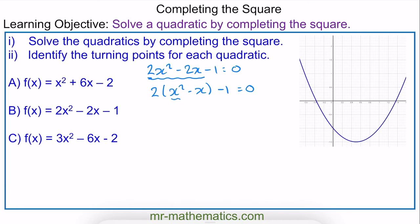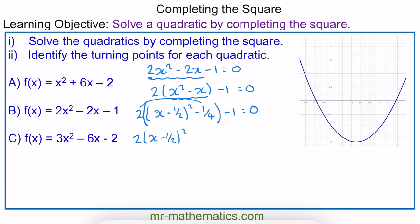I'm going to complete the square of this expression. So we have two lots of x minus one half, all squared. To complete the square I'm taking away a quarter, and this is all multiplied by the 2, take away the 1, equals 0. Expanding out the brackets, we have two lots of x minus one half all squared, and when I multiply the 2 by the quarter we have minus one half, then taking away the 1, to get to 0. Simplifying, we have two lots of x minus one half all squared, minus three over 2, equals 0.